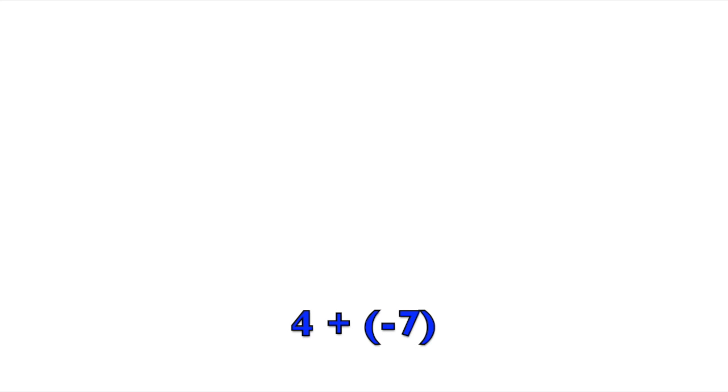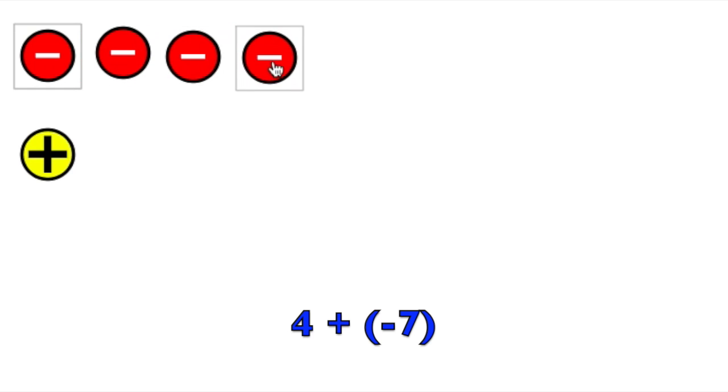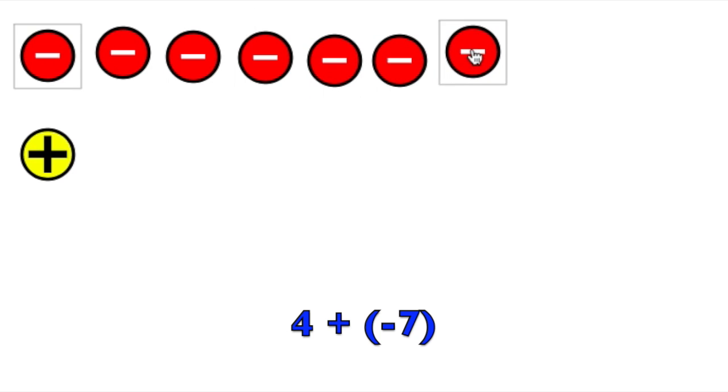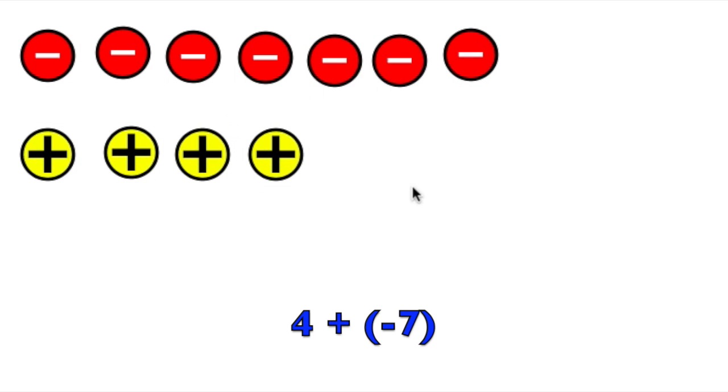Let's evaluate 4 plus negative 7. So we model it with 7 negative chips and 4 positive chips. Now, even though we're adding, we can't just add 7 and 4 together. We've got to cancel out the positives and negatives that match up to make 0.